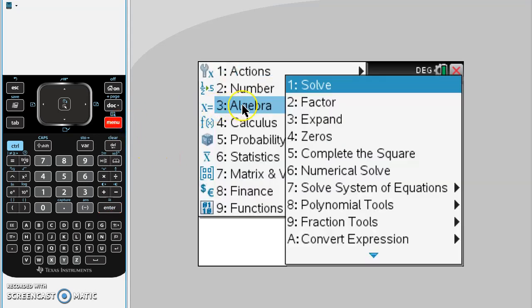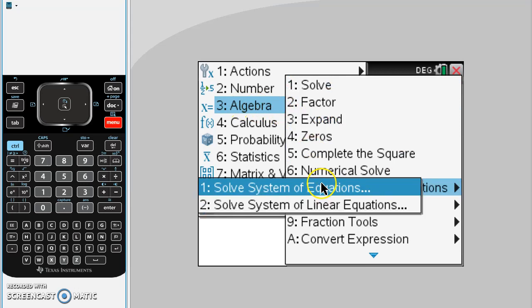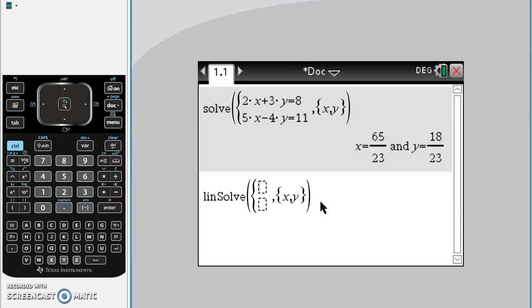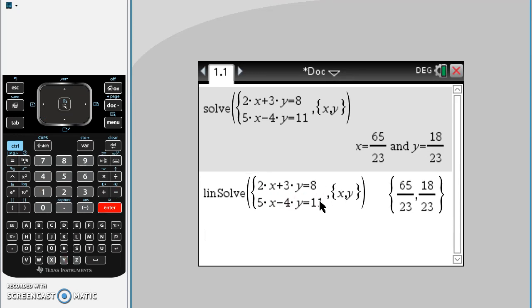Back down except this time linear solve. Same equations 2x plus 3y equals 8 and 5x minus 4y equals 11. You can see the same answer except this time it's given the answer in coordinate form. Okay, so it's possible we might want to solve using different letters.